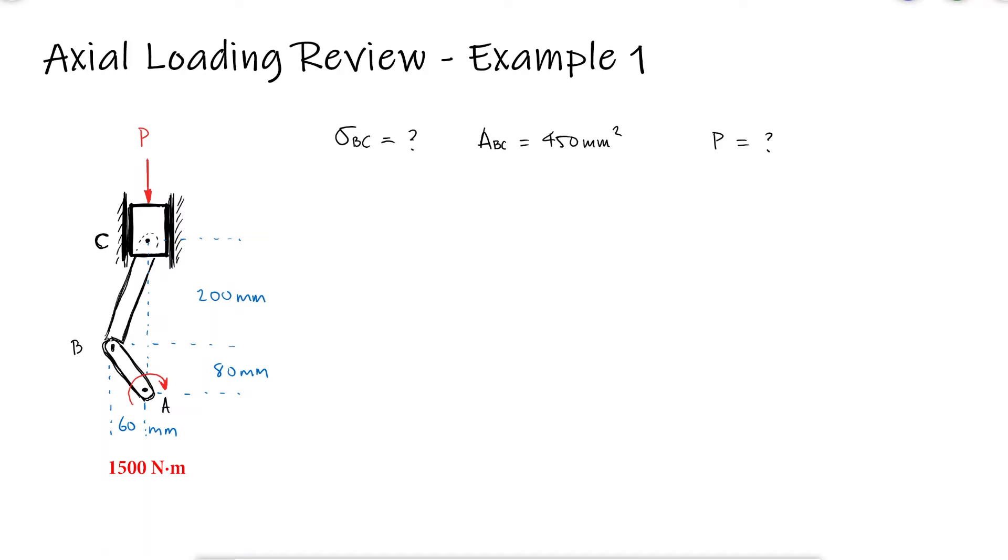To find the normal stress on rod BC, I need the internal force BC. A free body diagram of the piston itself shows me that I can find the force FBC if I know either the load P or the reaction from the wall of the cylinder on the piston.